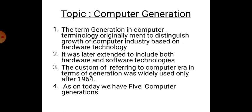The term was later extended to include both hardware and software technologies. You know a computer consists of two technologies: hardware and software. When they realized the importance of software, they included both hardware and software under the term 'generation.' The custom of referring to computer eras in terms of generations was widely used only after 1964, because after 1964 there was good commercial production of computers. As of today, we have five computer generations.